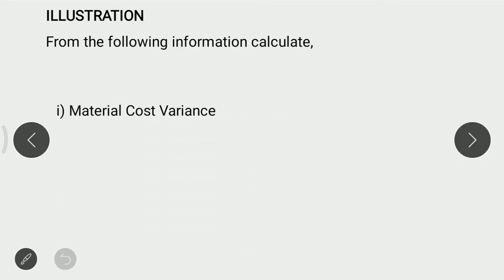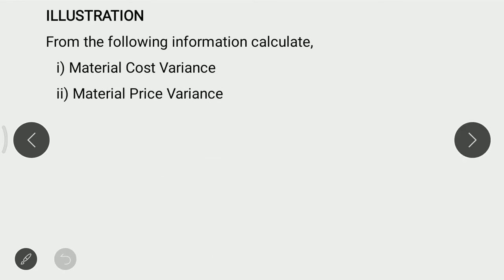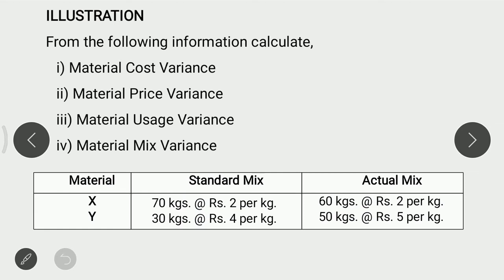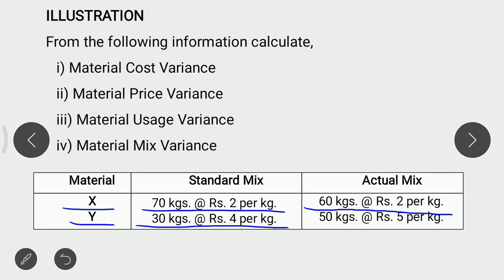Problem is: From the following information, calculate Material Cost Variance, Material Price Variance, Material Usage Variance, and Material Mix Variance. Information given in the table: Material X — Standard Mix 70 kg at Rs. 2 per kg, and Actual Mix 60 kg at Rs. 2 per kg. Second material Y — Standard Mix 30 kg at Rs. 4 per kg, and Actual Mix 50 kg at Rs. 5 per kg.